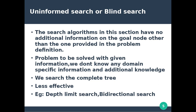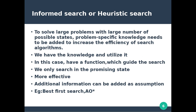Examples include depth-limited search and bidirectional search. For informed search and heuristic search: to solve large problems with a large number of possible states, problem-specific knowledge needs to be added to increase the efficiency of the searching algorithms.